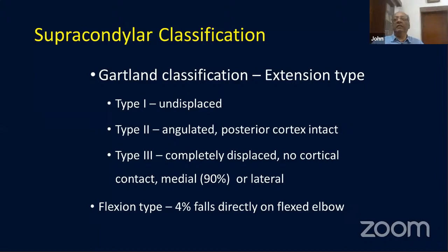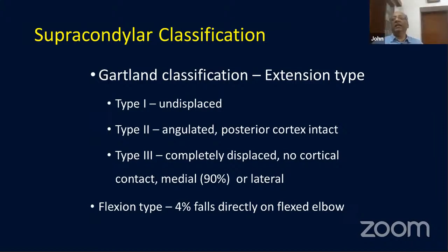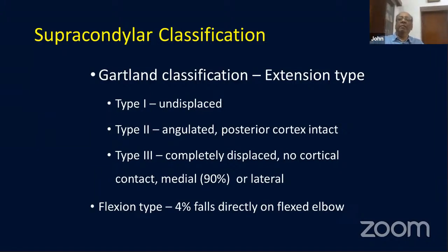Type 2 has angulation but still contact, meaning the posterior periosteum is usually intact. Type 3 is completely displaced with no cortical contact. About four percent of these are flexion types, which will have anterior displacement and can be difficult to make out on X-ray.